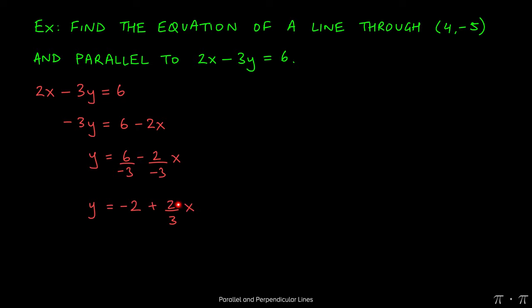Now we can rearrange the two terms here so that it looks more familiar to us. We get the equation of the line in slope-intercept form as y equals 2 thirds x minus 2.